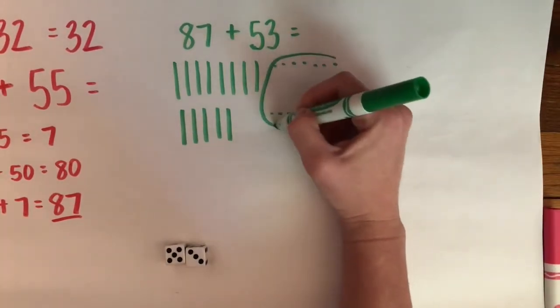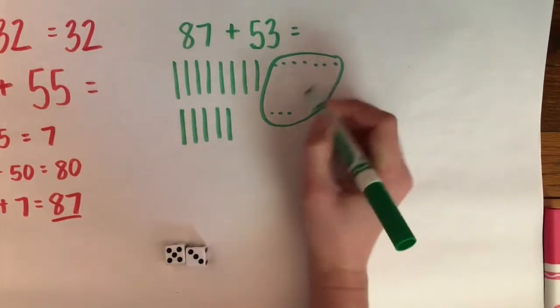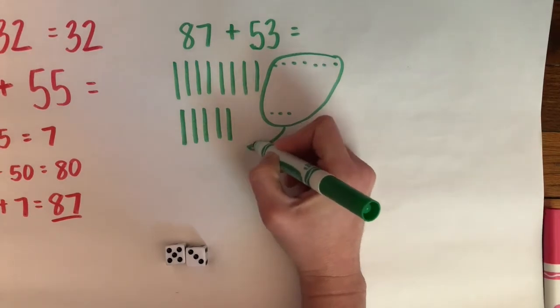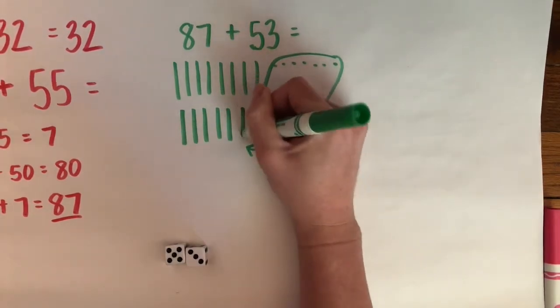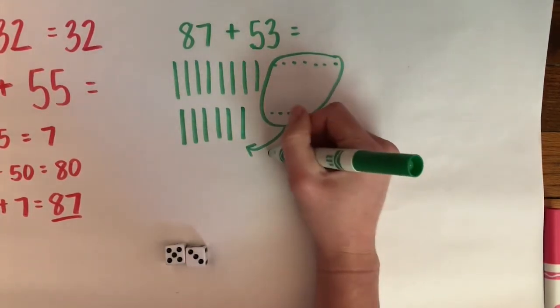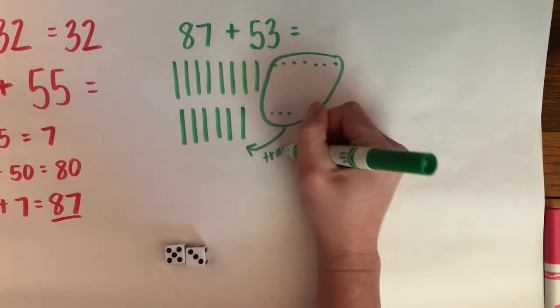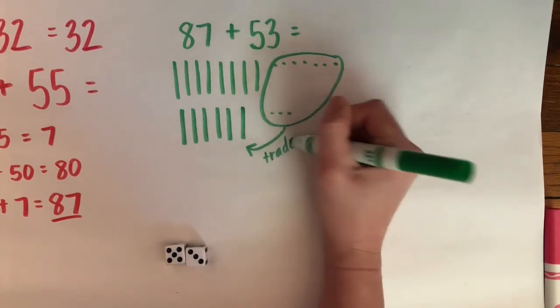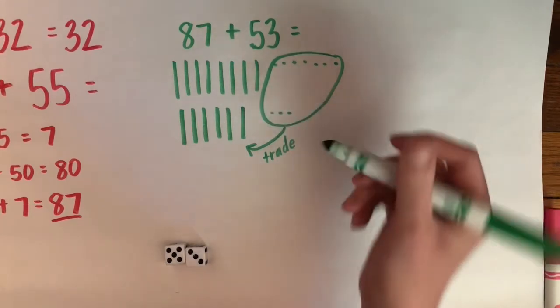So I'm going to circle these and I'm going to trade them in for a 10, another 10. So I made a trade. 10 ones and I traded it for 1 ten.